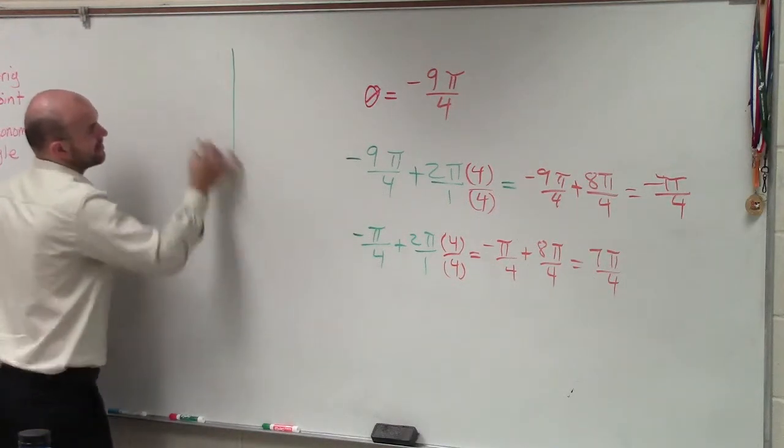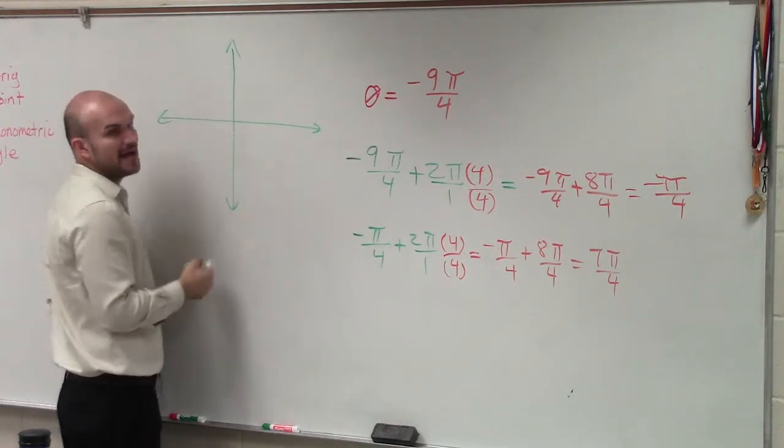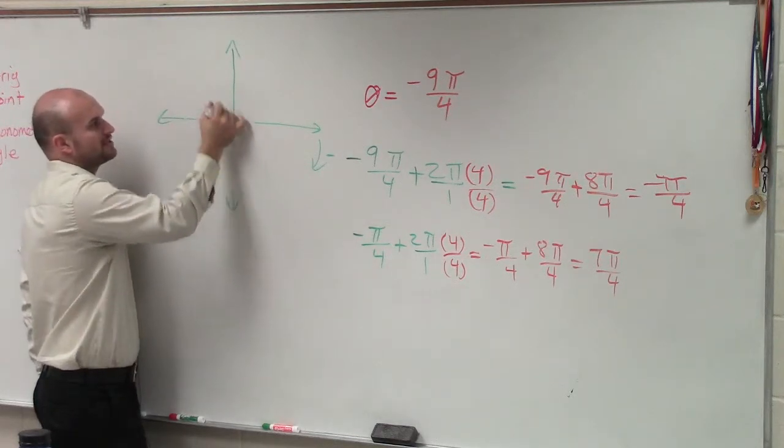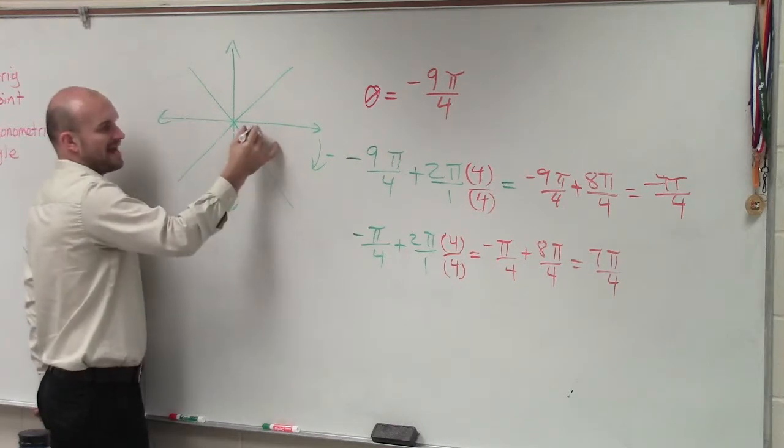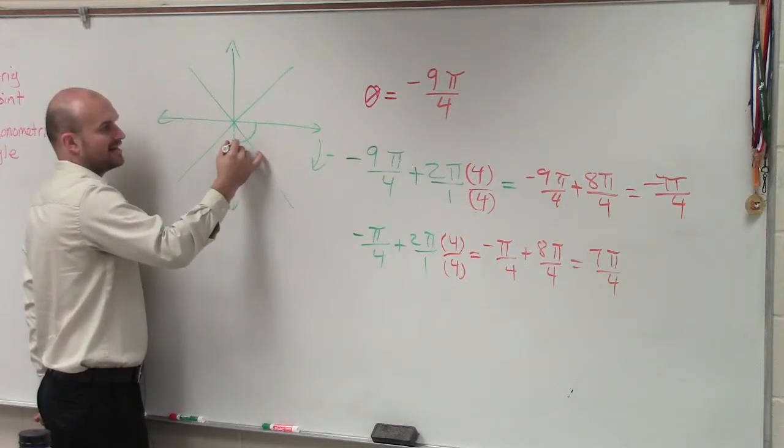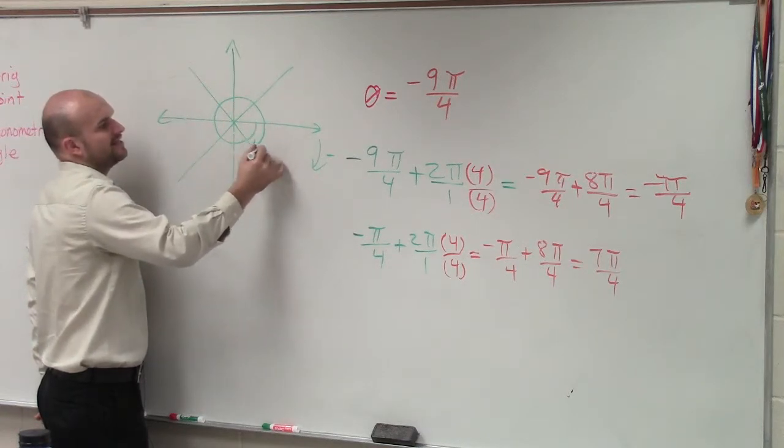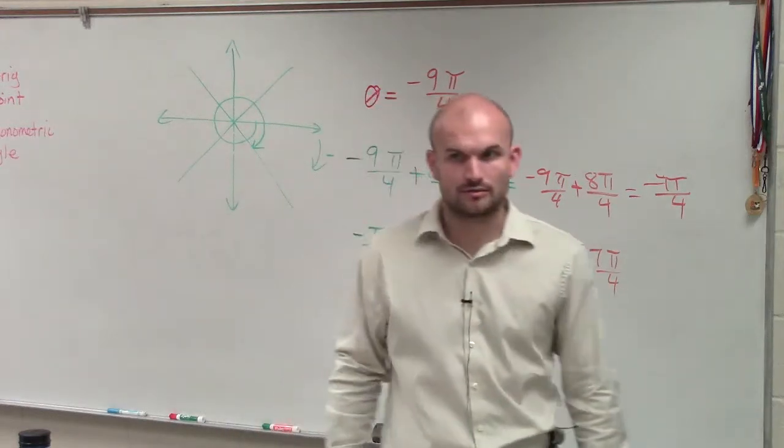Let's look at what this angle looks like. Negative 9π over 4 going in the negative direction. So if I broke this up into fourths, my angle looks like this. Negative π, negative 2π, 3π, 4π, 5π, 6π, 7π, 8π, negative 9π over 4. It's over a revolution of a circle, right?